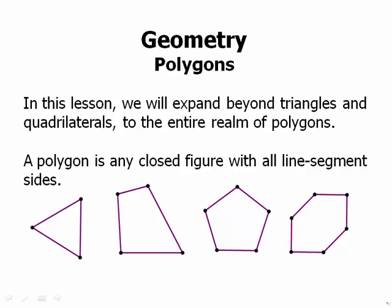So here we have an example of a polygon with three sides, a triangle with four sides, a quadrilateral, and then one with five sides and six sides. And you can imagine it could have many more sides.